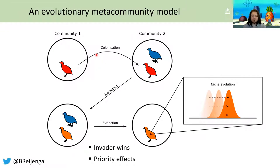To answer this question, we developed an evolutionary metacommunity simulation model in which we track the evolution of biodiversity in a given geographical area. Within this area, we have multiple species communities, and these communities are linked by colonization. Once a species has colonized multiple communities, this might result in speciation.